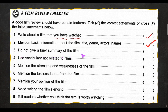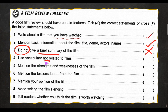Number three: do not give a brief summary of the film. Is it true? No, it's not true — you have to give a brief summary. Number four: use vocabulary not related to film. This one is also false — you must use words that are related to films. Number five: mention the strengths and weaknesses of the film. Yes, as I mentioned earlier — write all the good things and all the bad things you have to include in your review.